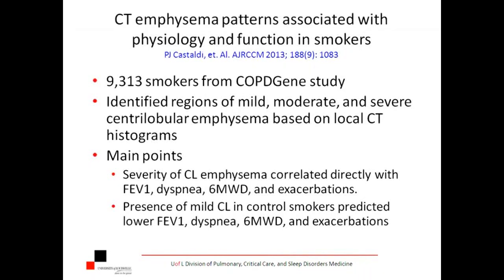One large study by Dr. Castaldi — not yet out in the Blue Journal, but if you're an ATS member you can log on and get it before it's published — dipped into the COPD Gene database and got 9,313 smokers. They had an expert radiologist look at 250 CT scans and grade the centrilobular emphysema. Up to this point, CT scanning had been used broadly — doing a histogram of the entire lungs, and if it was less than minus 950 Hounsfield units, they said that's emphysema.